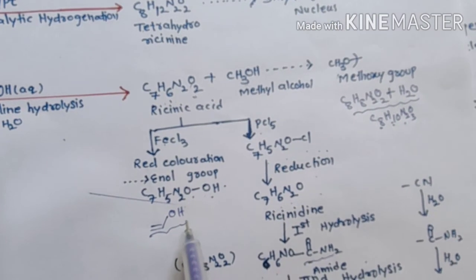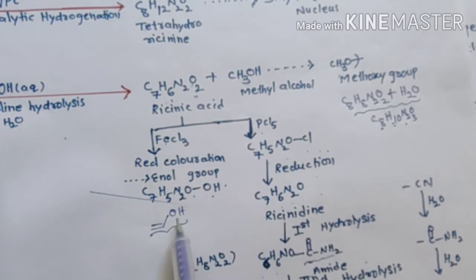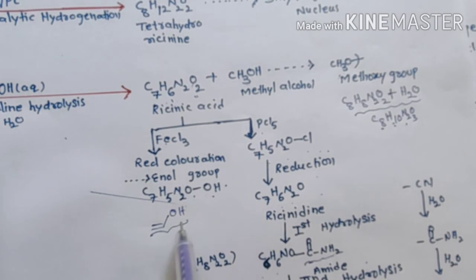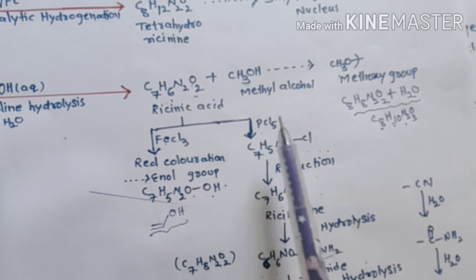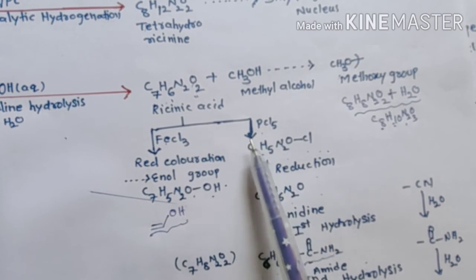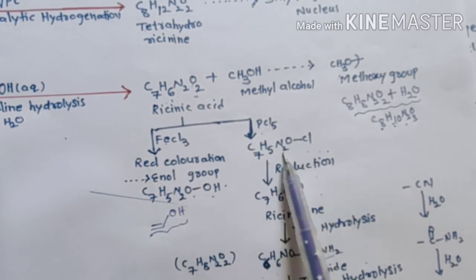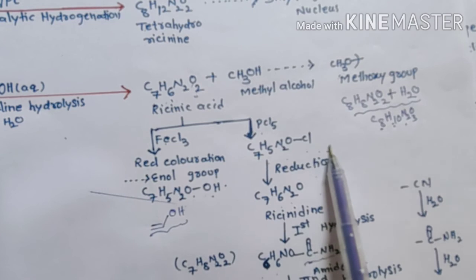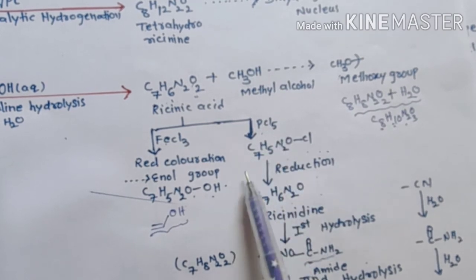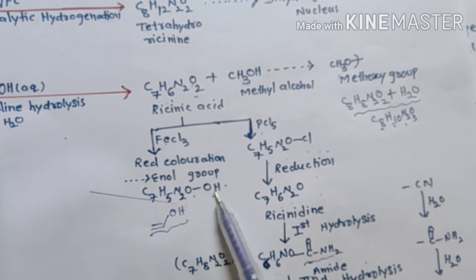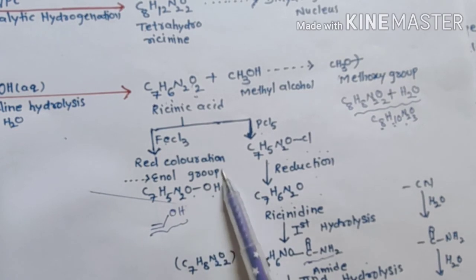An enol group means a hydroxyl group that is attached to a double bond — this is known as an enol. When resinic acid is treated with phosphorus pentachloride, we get the chloro derivative. Phosphorus pentachloride substitutes the hydroxyl (OH) group with chlorine.